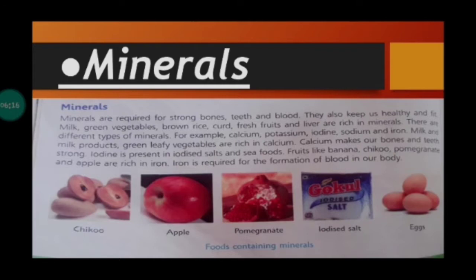There are different types of minerals — for example, calcium, potassium, iodine, sodium and iron. Milk and milk products and green leafy vegetables are rich in calcium. Calcium makes our bones and teeth strong. Iodine is present in iodized salt and seafood. Fruits like banana, chiku, pomegranate and apple are rich in iron. Iron is required for the formation of blood in our body.